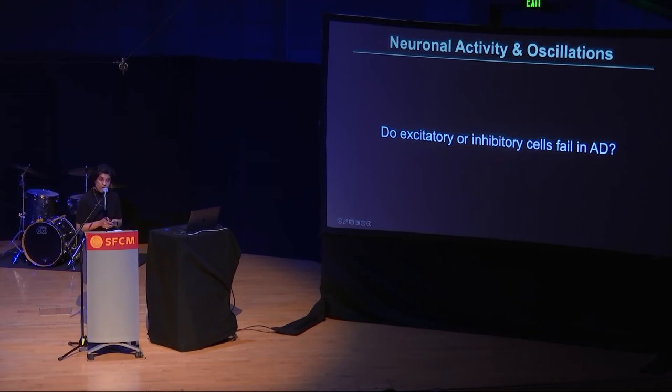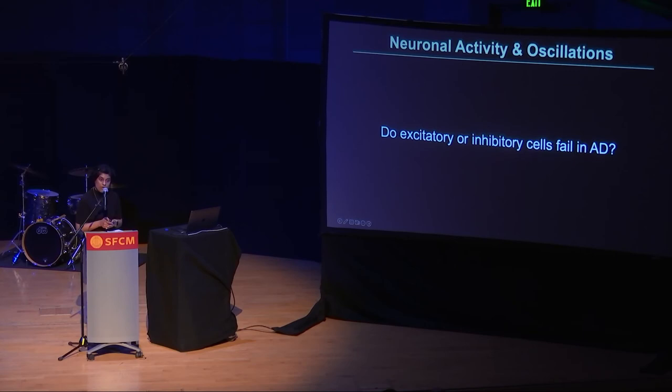So which ones go wrong in Alzheimer's disease? What we found was that they both go wrong. Specifically, the excitatory abnormalities are associated with tau accumulations, whereas inhibitory abnormalities are associated with amyloid accumulations.